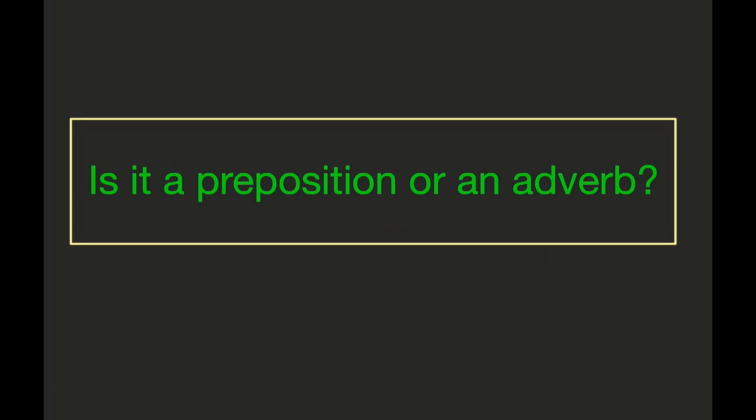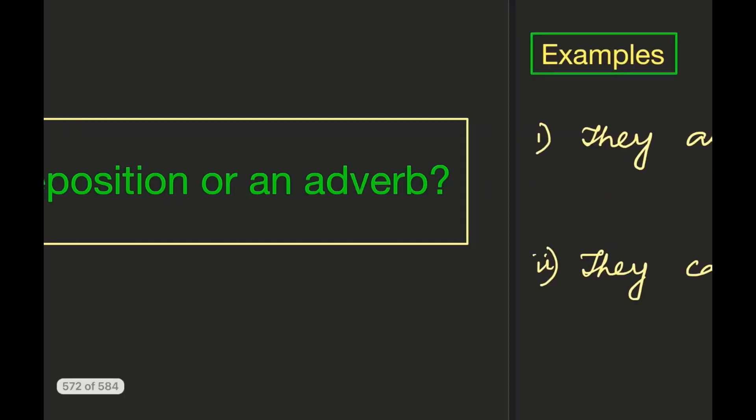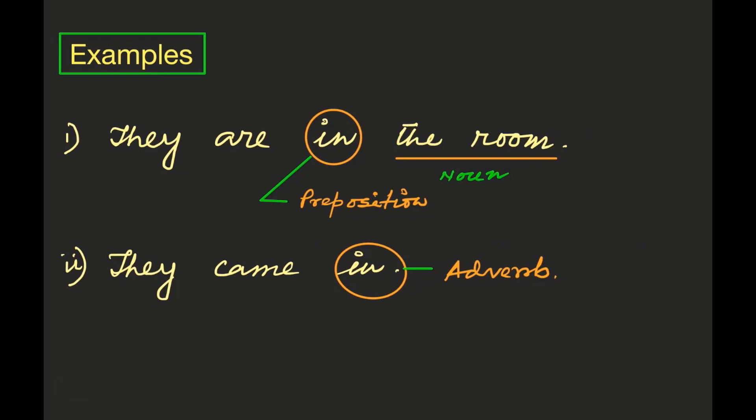Now there is a question: is it a preposition or an adverb? Sometimes you may be confused about the role of a word in a sentence. To remove the confusion, try to remember that a word is a preposition when it connects a noun or a pronoun with the rest of the sentence. But when it is used like an adverb to denote a position, then it is an adverb, and in that case there will be no noun or pronoun after it.